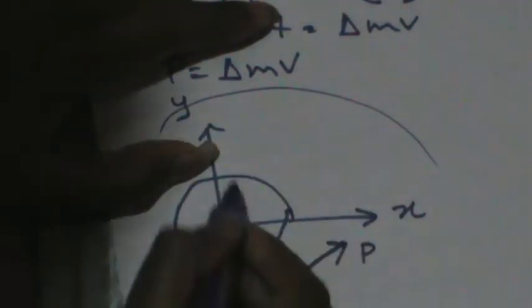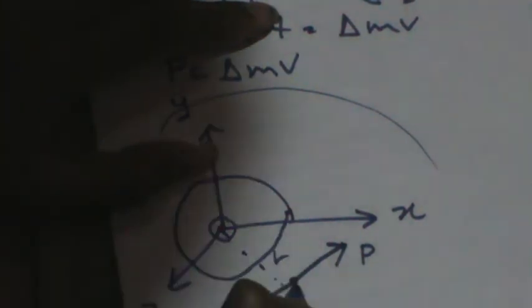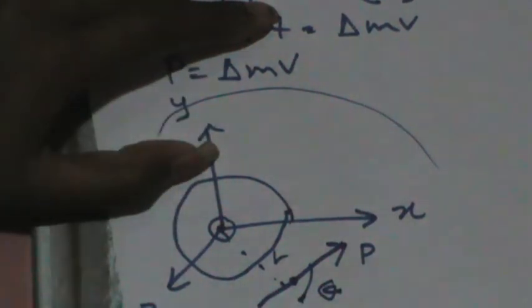This is the center, this is r, and this is the angle θ. You can say L equals P times r sin θ. Now P is the linear momentum, and L is the angular momentum. P is a vector, therefore L is also a vector. The direction of angular momentum is formed by the right-hand rule. So L equals mvr.